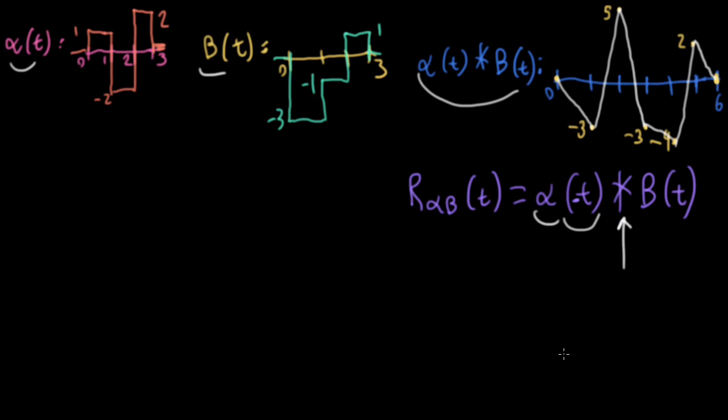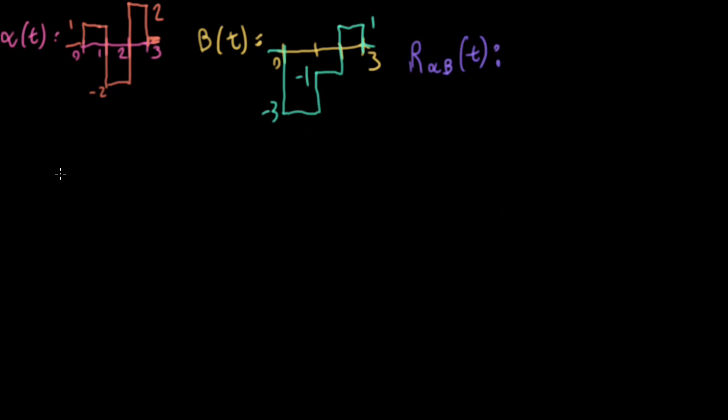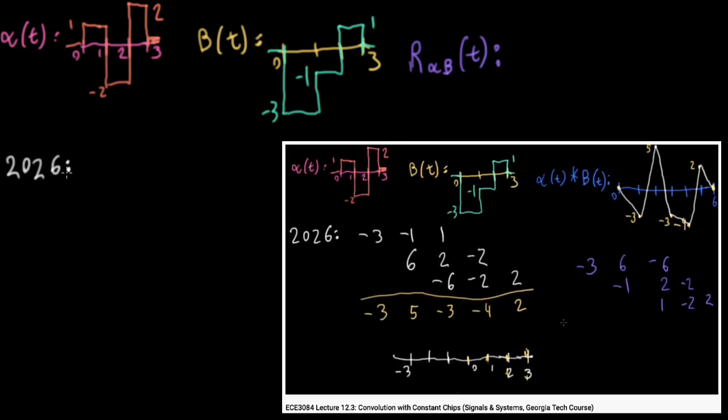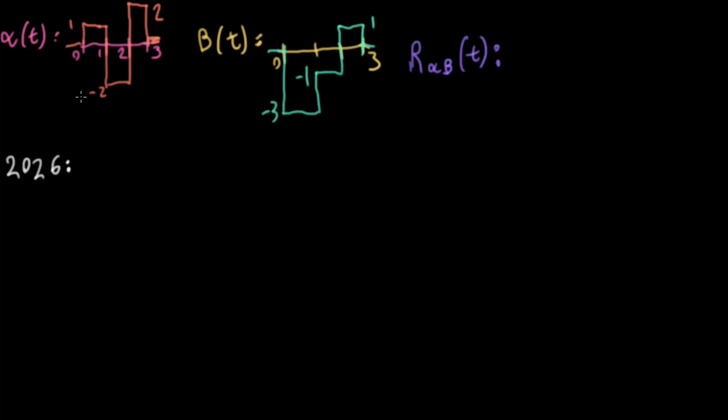Because then if we're flipping and shifting a function that's already flipped from this cross-correlation definition, well, it's pretty much like the convolution we usually do. We just don't bother flipping the function, because the two flips cancel each other out. That's the way I like to think about it, although your mileage may vary. And the main reason I wanted to show you this particular example is to show you a trick where we can use an ECE 2026-style convolution table that we previously used for discrete time convolution to solve this kind of problem quickly.